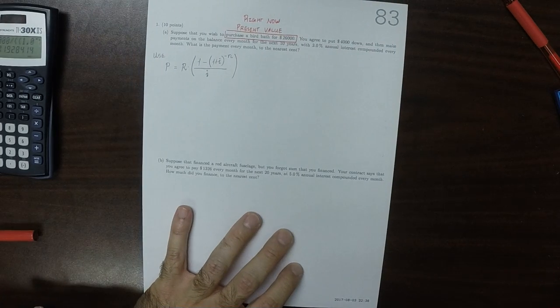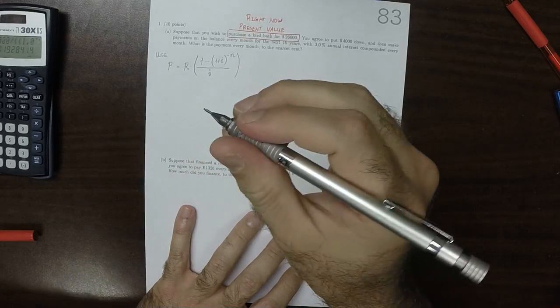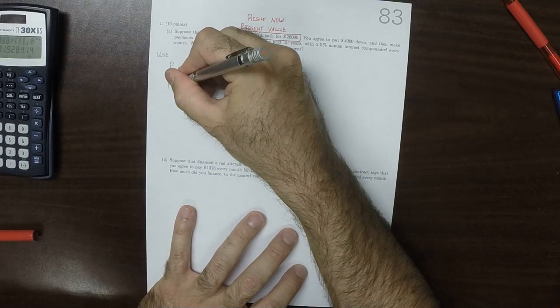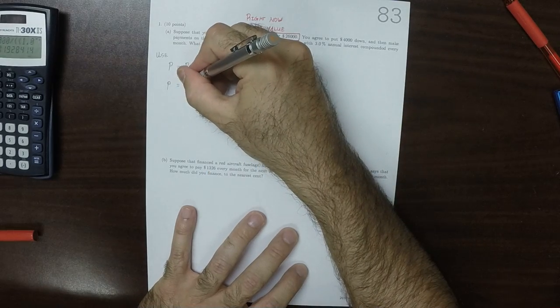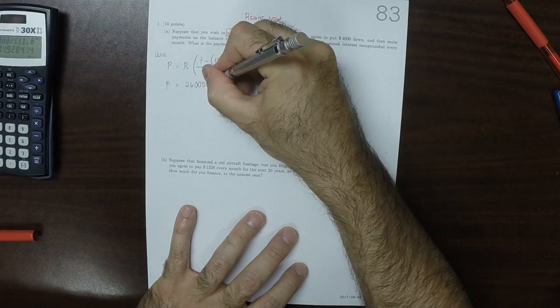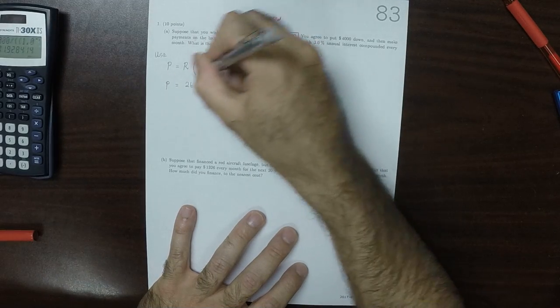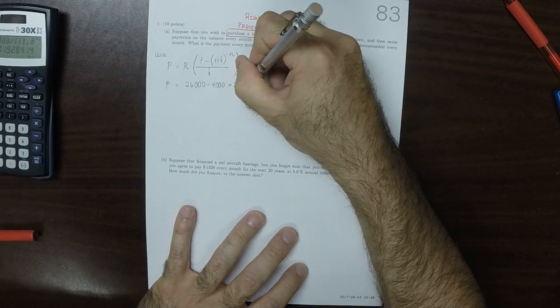And, specifically, what is the payment every month? So, the present value, because of the way this story is worded, it's a $26,000 birdbath but you put $4,000 down, so the outstanding present value is $22,000.